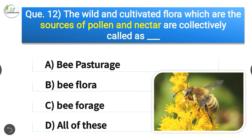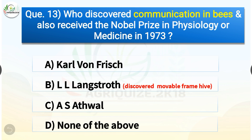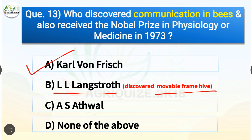Question number thirteen: Who discovered communication in bees and also received the Nobel Prize in Physiology or Medicine in 1973? The options are: Karl von Frisch, L.L. Langstroth, A.S. Atwal, or none of the above. The correct answer is option A — Karl von Frisch. Karl von Frisch discovered communication in bees and received the Nobel Prize in 1973. L.L. Langstroth discovered the movable frame hive.